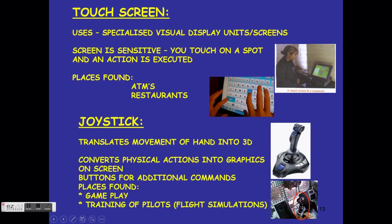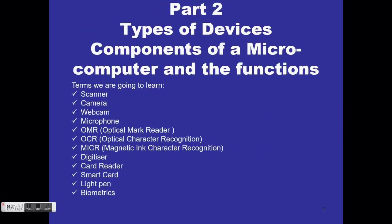A joystick is our next input pointing device. It converts physical hand movements into three-dimensional graphics on the screen. It has buttons for additional commands. We find joysticks in gameplay, pilot training simulations, actual aeroplanes, and even large earth-moving equipment. This concludes Part One — go to the video for Part Two where we will discuss the rest of our devices. Happy learning, stay safe!